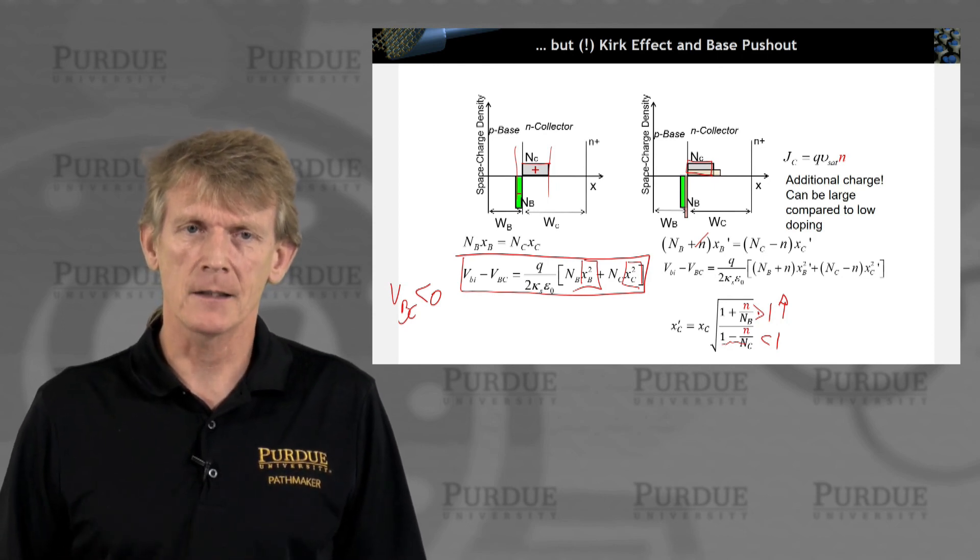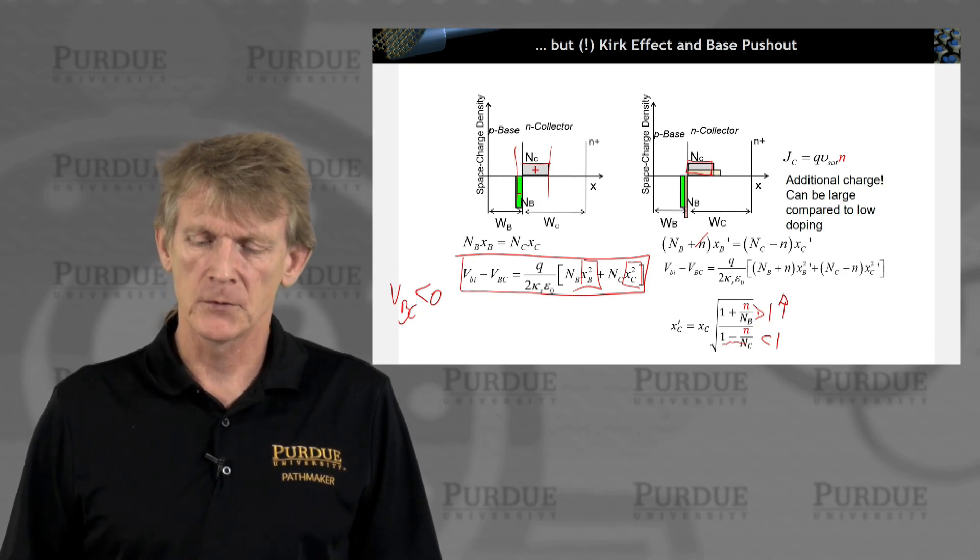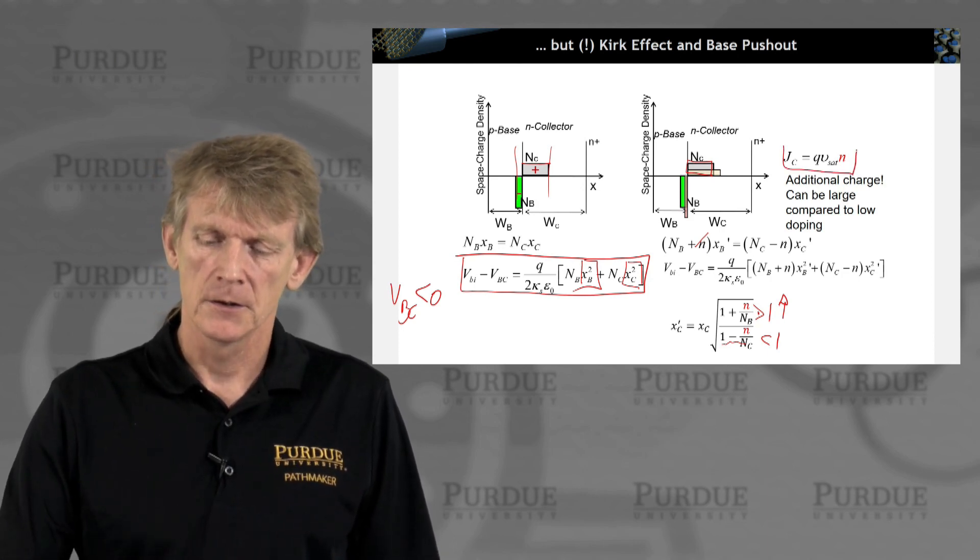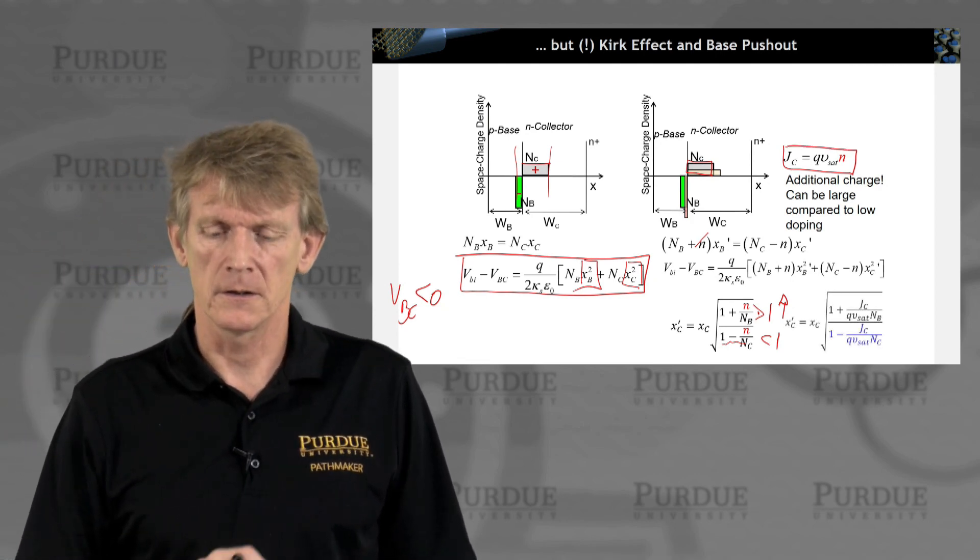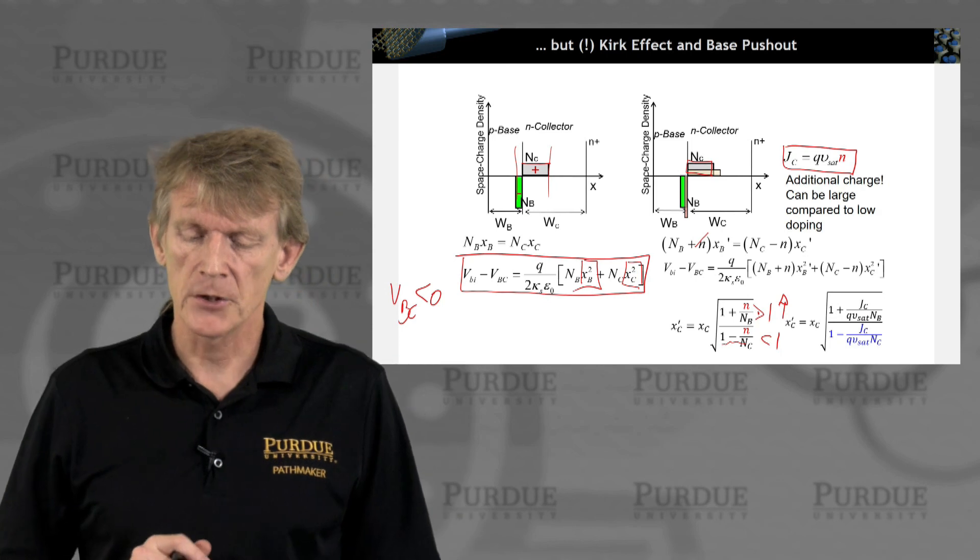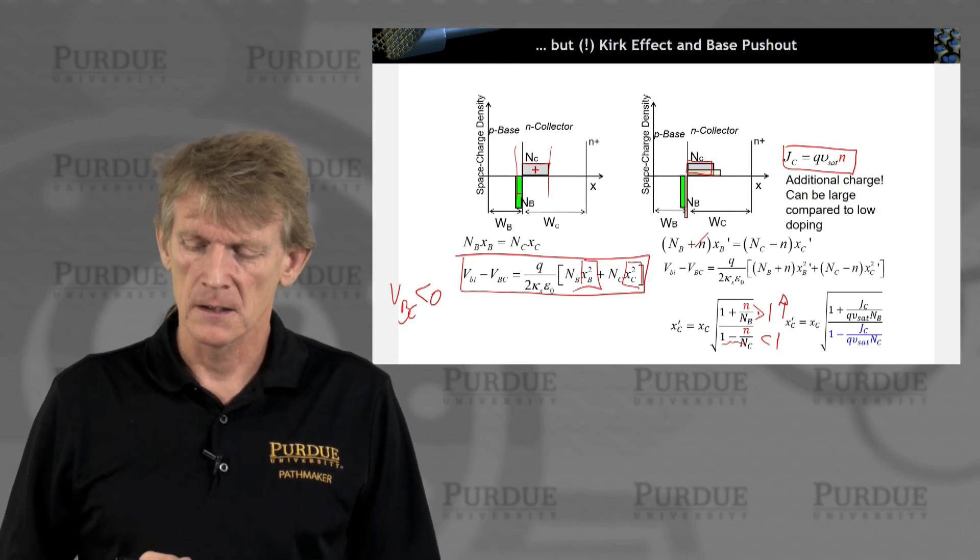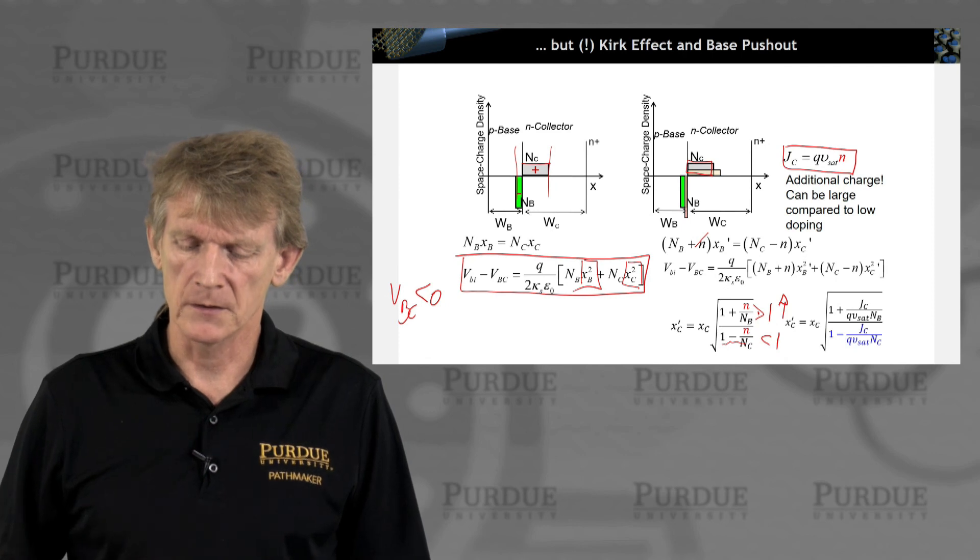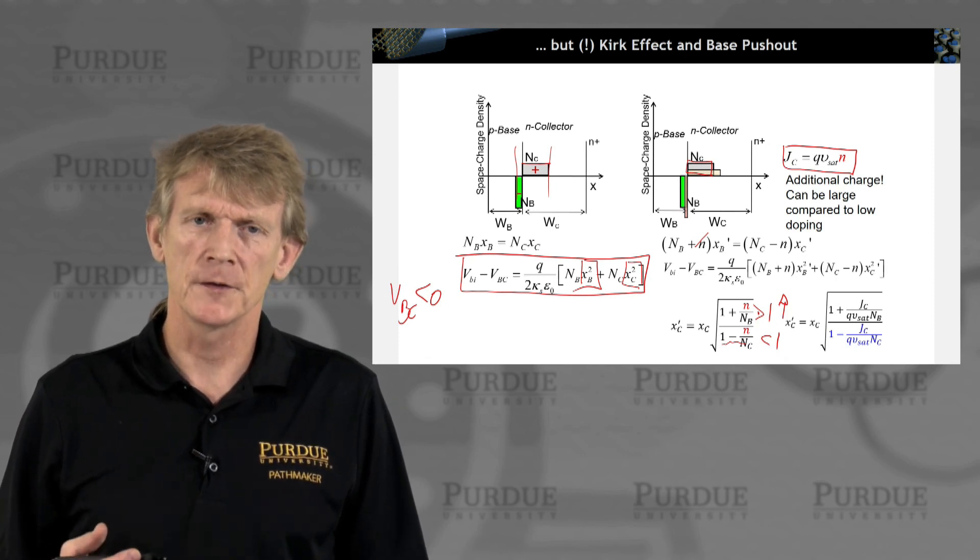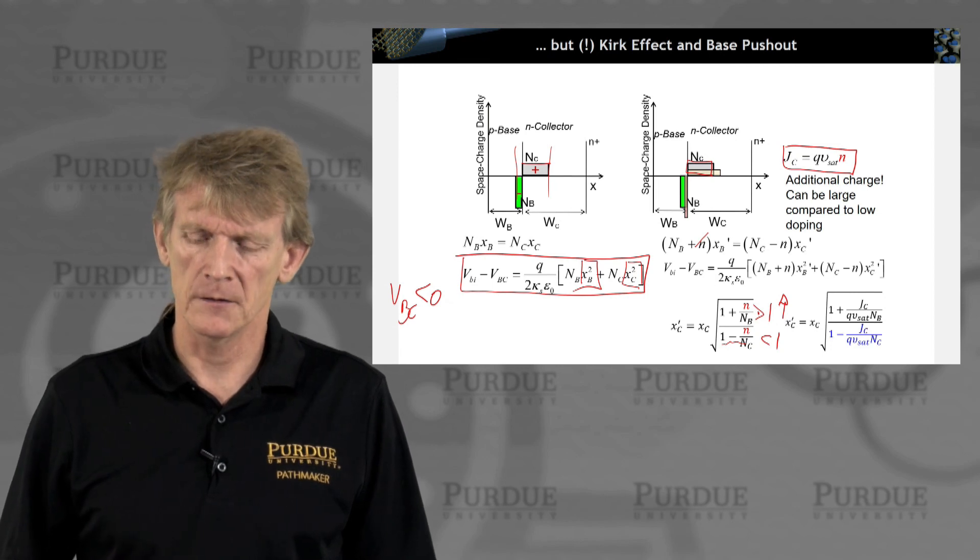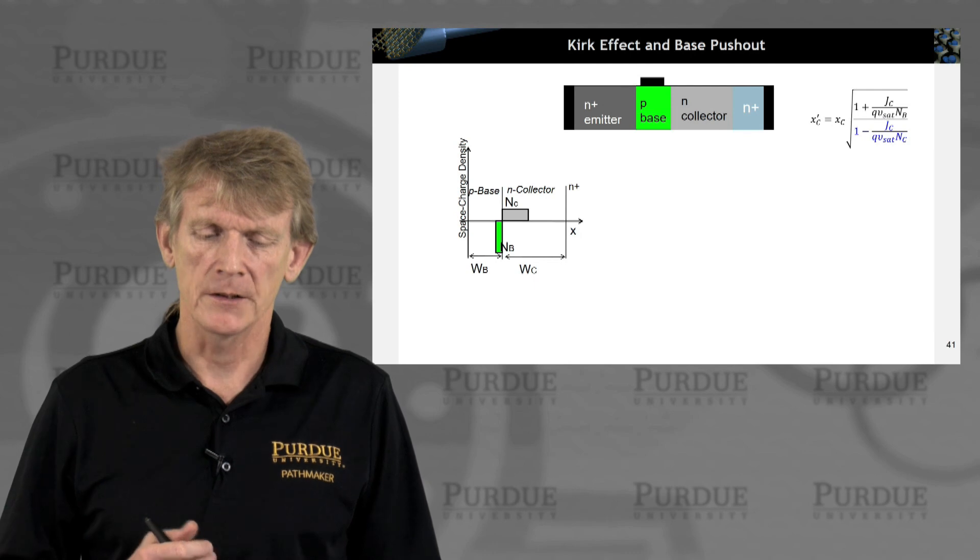So you effectively, electrically, make the depletion region longer and longer, up to some point of your saturation velocity that you can support in the current. So you can now plug in the saturation velocity and the current that is flowing instead of the charge density. And those are now some physical quantities you can obtain depending on your material.